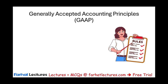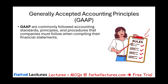GAAP is the rules for accounting, and I'm going to say the word 'rules' is a misnomer because GAAP are commonly followed accounting standards — notice 'commonly,' it means commonly accepted, generally accepted. So GAAP are rules that are generally accepted by everyone: accounting standards, principles, and procedures that companies must follow when compiling their financial statements. When you're preparing your financial statements, you need some sort of rules, and those rules are found in GAAP. Who writes GAAP? Who sets GAAP? We'll talk about this shortly.